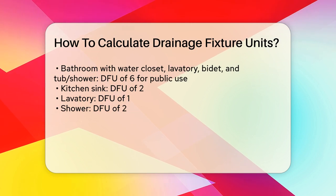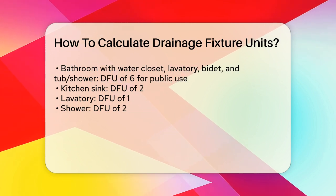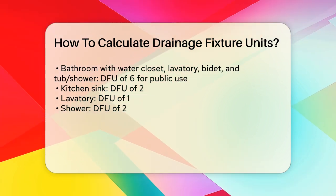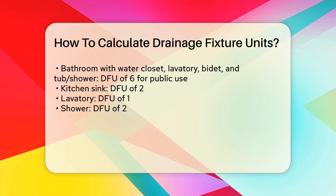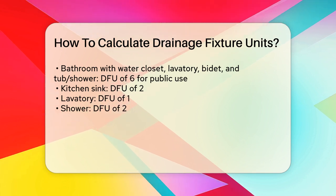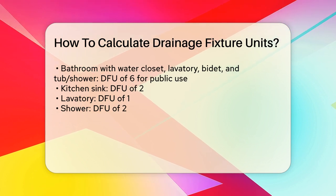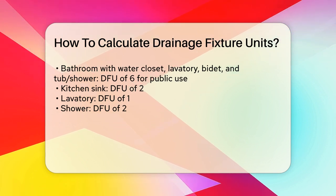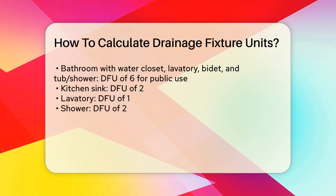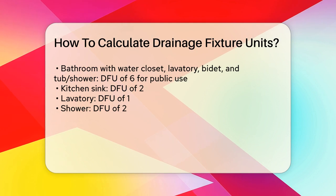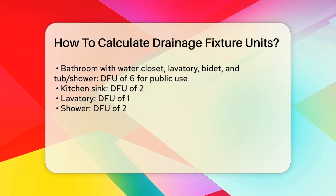Here are some specific values to keep in mind. A kitchen sink typically has a DFU of two. A lavatory usually has a DFU of one. A shower is generally assigned a DFU of two. A water closet can have a DFU of three or four, depending on the type and installation.